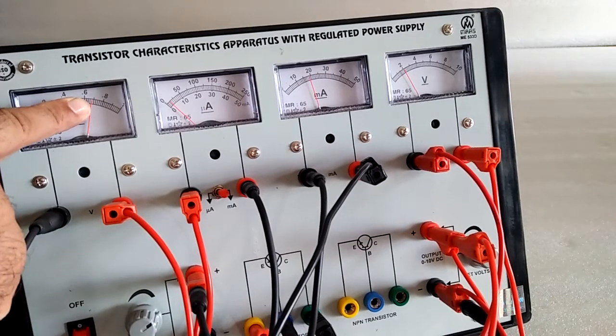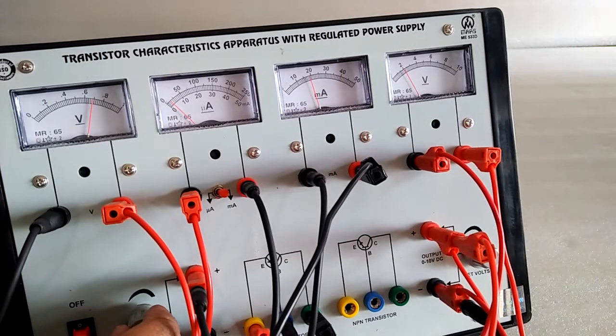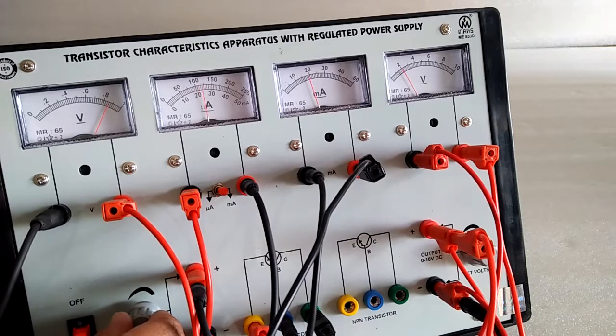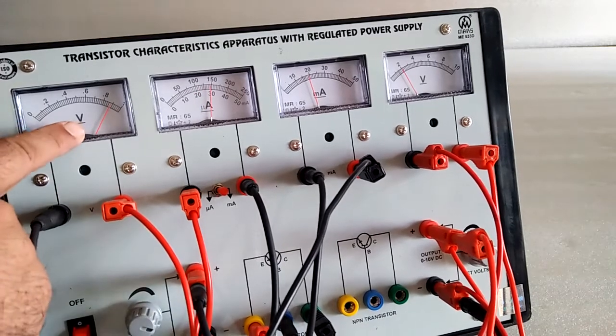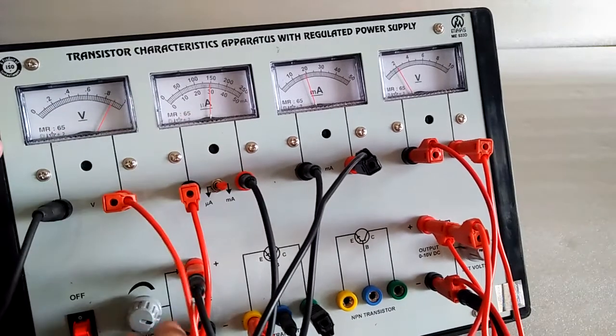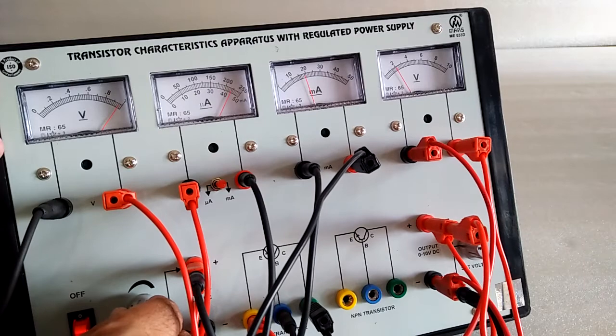Near 0.7 volt current will start. Now current will rise fast, voltage slowly. Take the readings of base emitter voltage and current IB and make the graph.